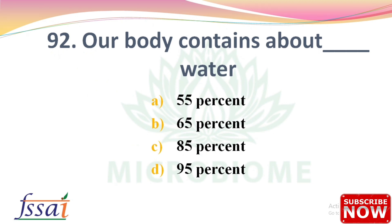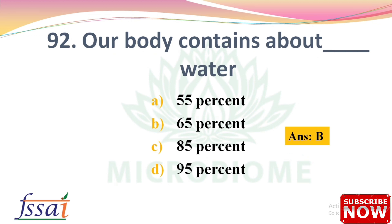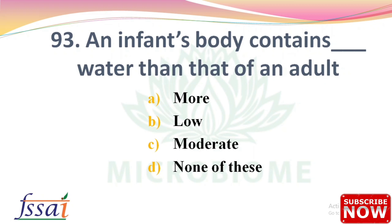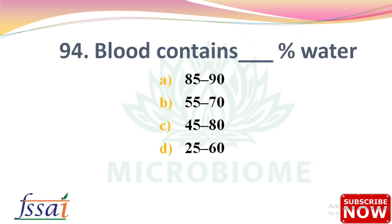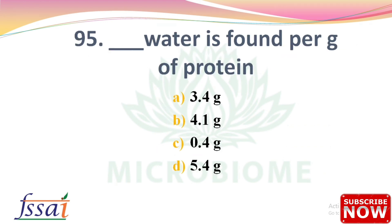Next: Our body contains about dash water — options: 55%, 65%, 85%, 95%. The right answer is option B, 65 percent. Next: An infant's body contains dash water than that of an adult — the right answer is option A, more. Next: Fat contains dash water — options: 85–90%, 55–70%, 45–80%, 25–60%. The right answer is option A, 85 to 90. Next: Dash water is found per gram of protein — options: 3.4g, 4.1g, 0.4g, 5.4g. The right answer is option C, 0.4 gram.